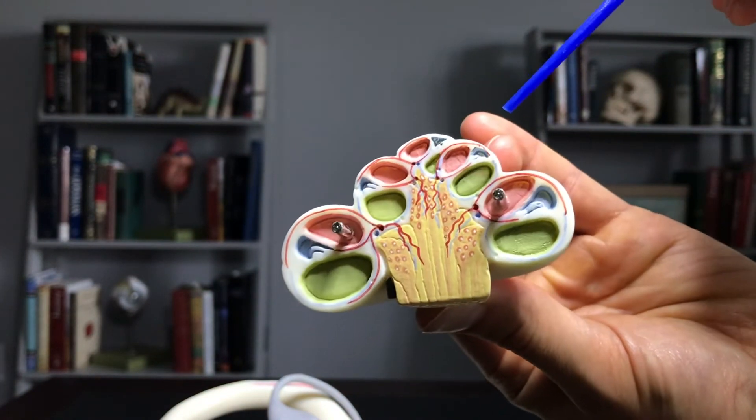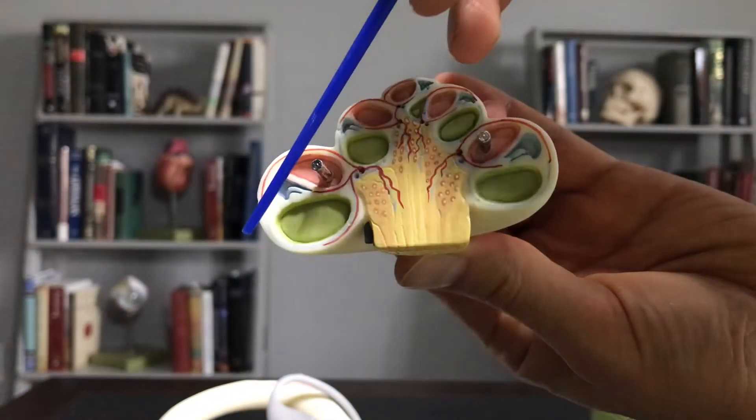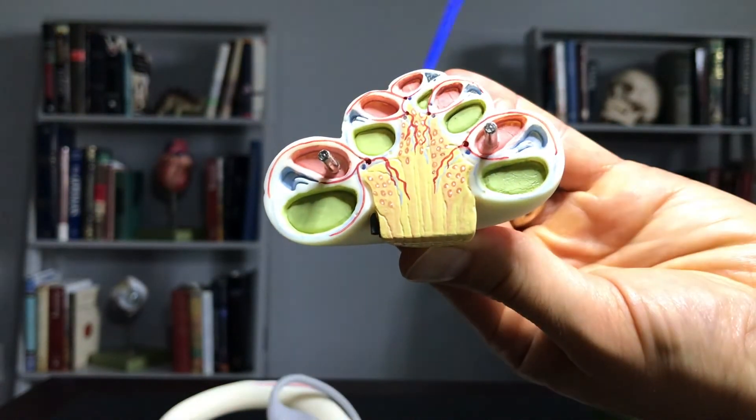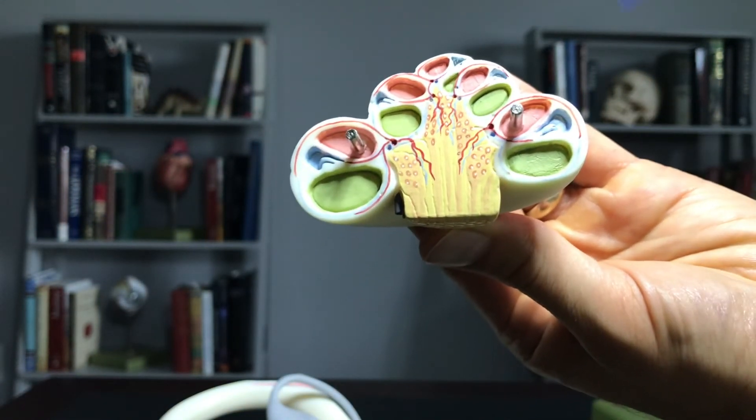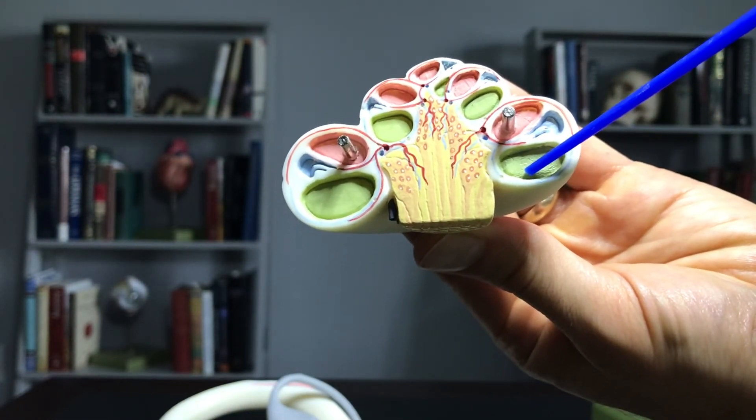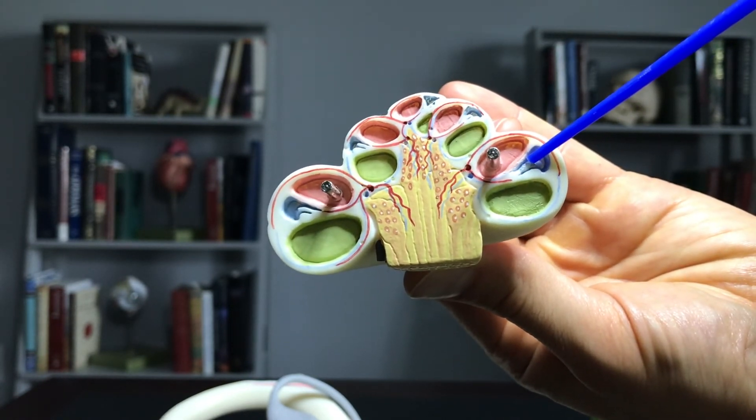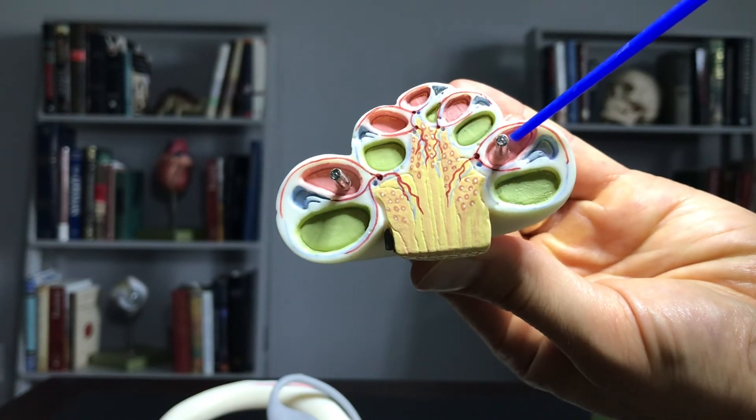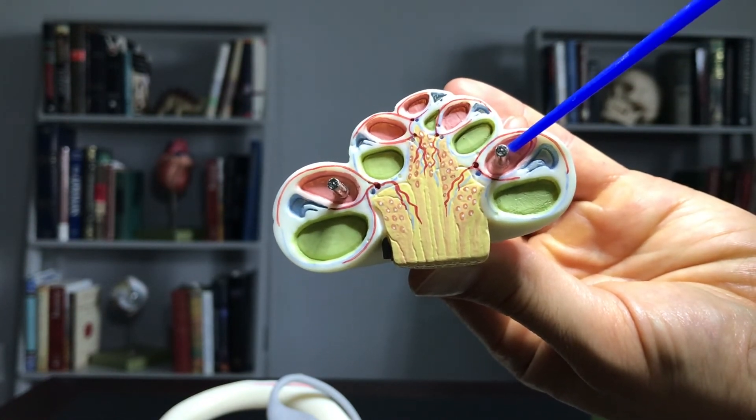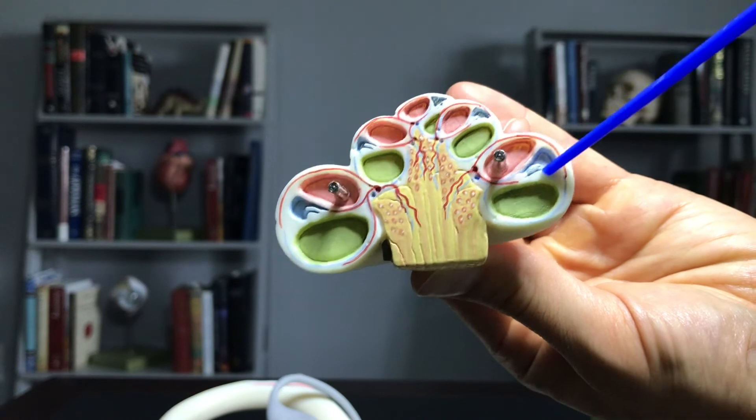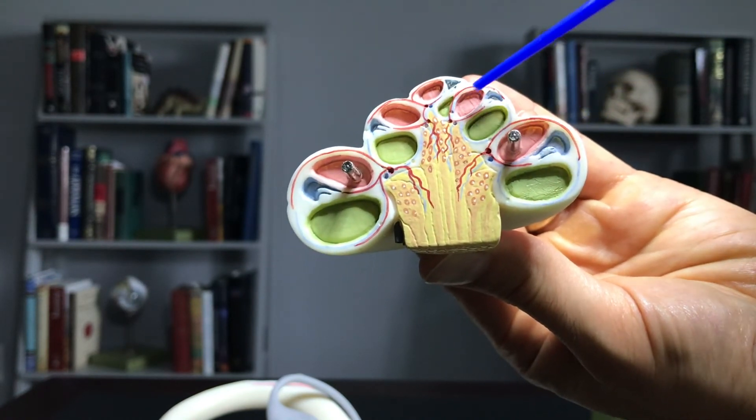This cross-section of the cochlea reveals all the little ducts that run inside. In green, you'll see the tympanic duct. In blue, you'll see the cochlear duct. And this pinkish color represents the vestibular duct. This would be one set right here. Then you'll see another set.